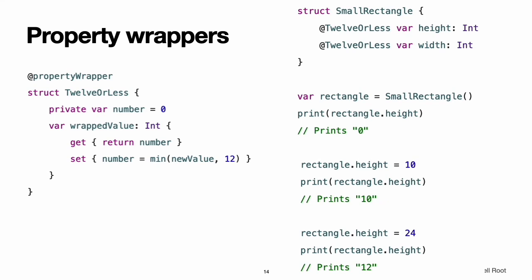To define a property wrapper, you make a structure, enumeration, or class that defines a wrappedValue property. In the code below, the TwelveOrLess structure ensures that the value it wraps always contains a number less than or equal to 12. If you ask it to store a larger number, it stores 12 instead. The setter ensures that new values are less than or equal to 12, and the getter returns the stored value.